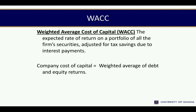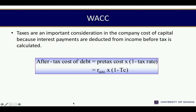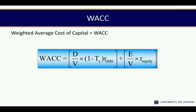Now we rework it: our weighted average cost of capital is 30% of debt financing multiplied by 5.2% (after-tax cost of debt), plus 70% multiplied by 14% (cost of equity). Our weighted average cost of capital is 11.4%. The after-tax cost of debt formula is: pre-tax cost of debt multiplied by (1 minus the tax rate), giving the after-tax cost of debt, which is what we use in the computation of the weighted average cost of capital.